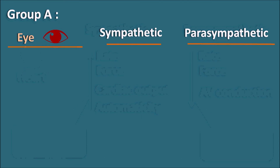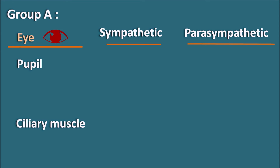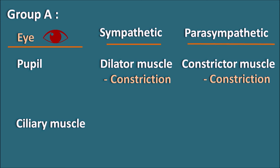The second Group A organ is the eye, which has two targets: the pupil and the ciliary muscle. The pupil has two types of muscles — the dilator muscle and the constrictor muscle. The sympathetic system acts on the dilator muscle, producing its constriction, which results in pupillary dilation. The parasympathetic system acts on the constrictor muscle, producing its constriction, which results in pupillary constriction. So even though both produce muscle constriction, the effects are opposite.